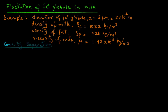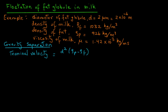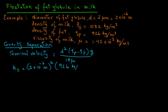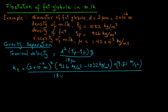First, we will look at gravity separation. From a previous tutorial, the terminal velocity equals d² times (rho_p minus rho_f) times g, the acceleration due to gravity, divided by 18·mu. Substituting the values, we have u_t equals (2×10⁻⁶ m)² times (926 kg/m³ minus 1032 kg/m³) times 9.81 m/s², divided by 18 times 1.42×10⁻³ kg/(m·s).